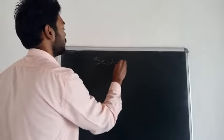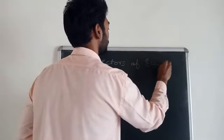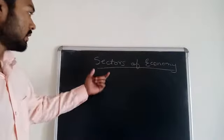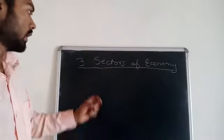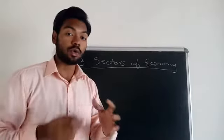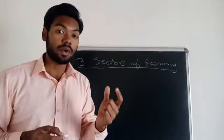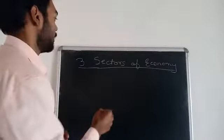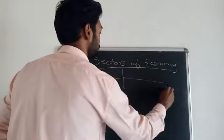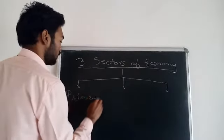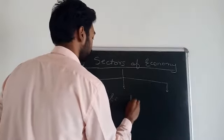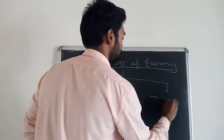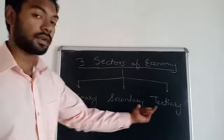We have to study three sectors and three types of industries, so first we will learn about the sectors. There are three sectors of economy. Economy means the total output or net worth of an entire country. It is categorized into three types: the first is the primary sector, the second is the secondary sector, and the third is the tertiary sector.